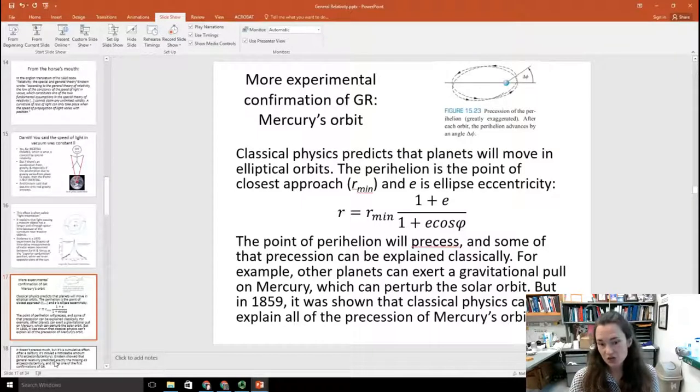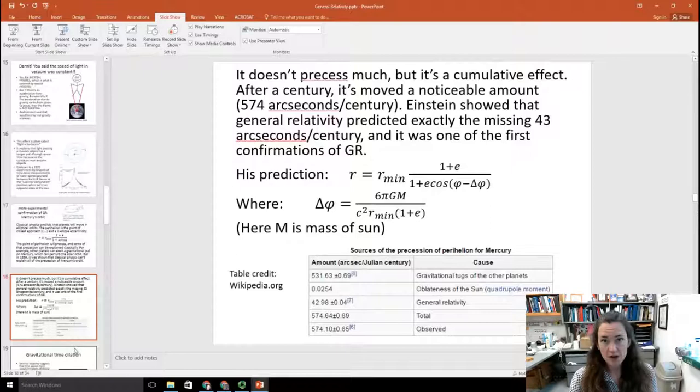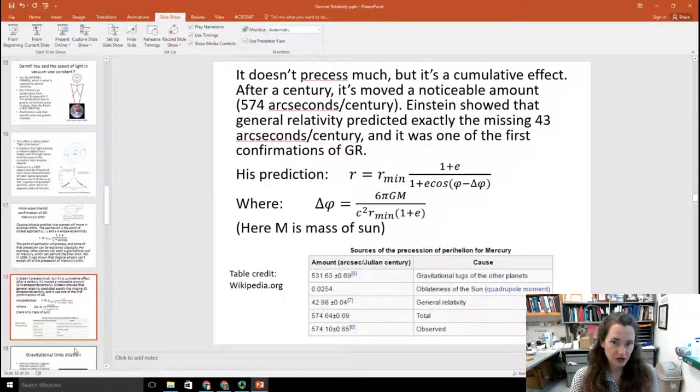But in 1859, it was shown that classical physics can't explain all of the precession of Mercury's orbit. There was about 10% or so, a little bit less, of the precession that could not be explained classically. So it doesn't precess much, but it is a cumulative effect. So after a century, it's moved a noticeable amount, like 574 arc seconds per century. And Einstein showed that general relativity predicted exactly the missing 43 arc seconds per century that classical physics couldn't account for. And it was one of the first confirmations of general relativity.